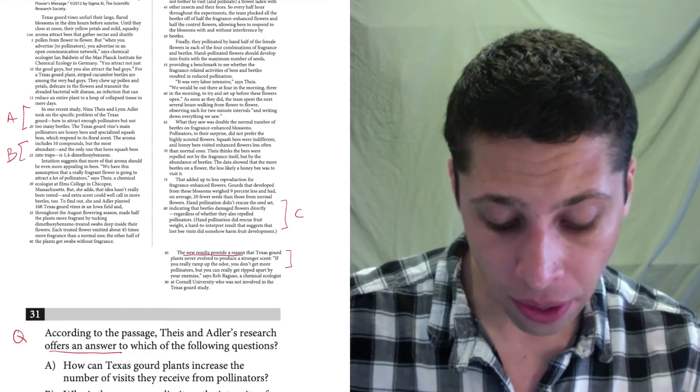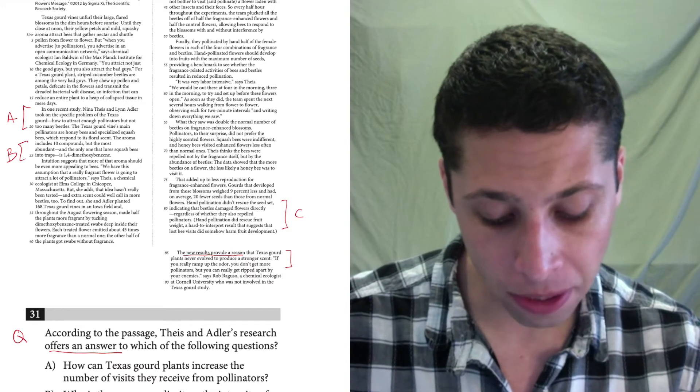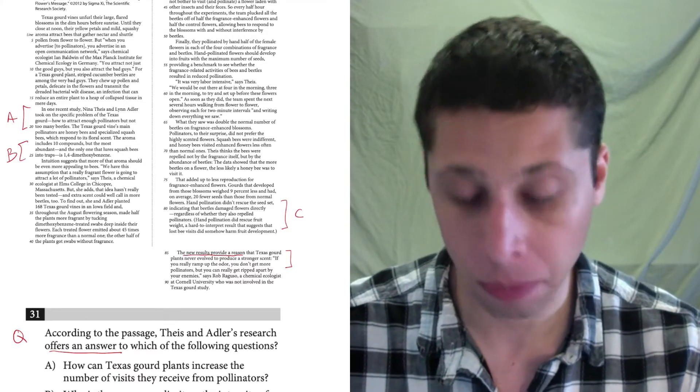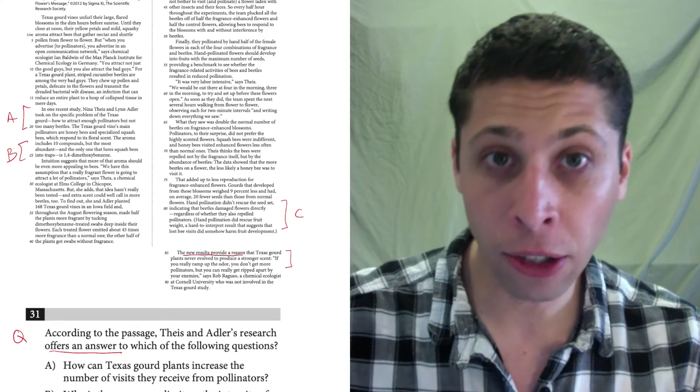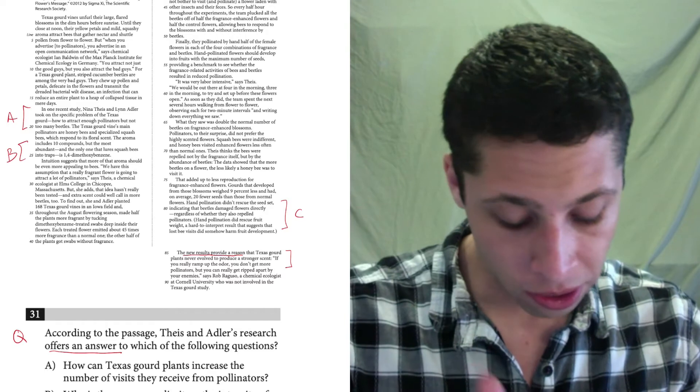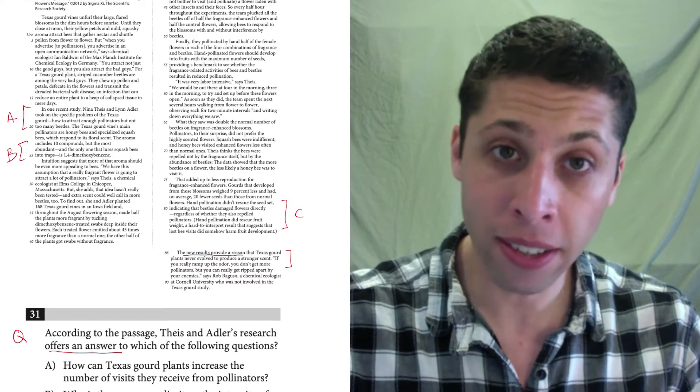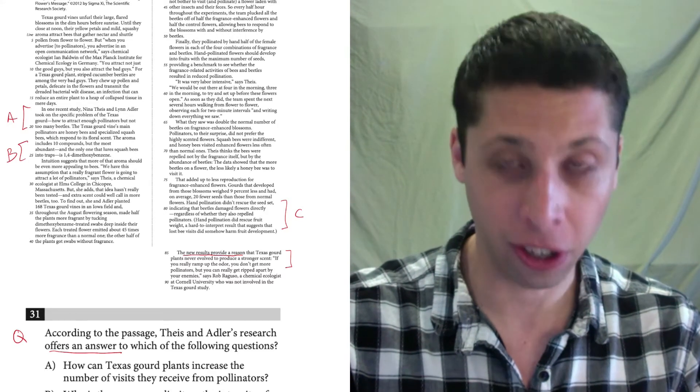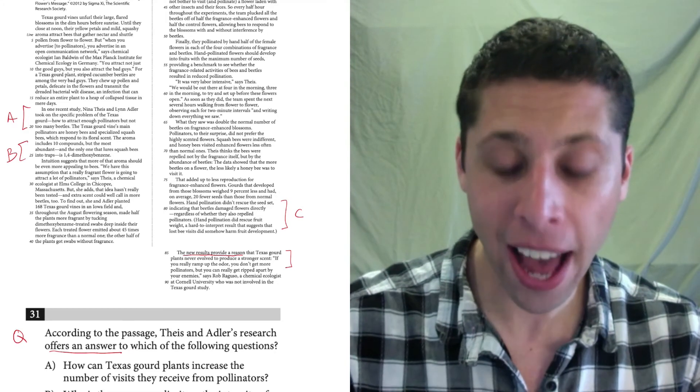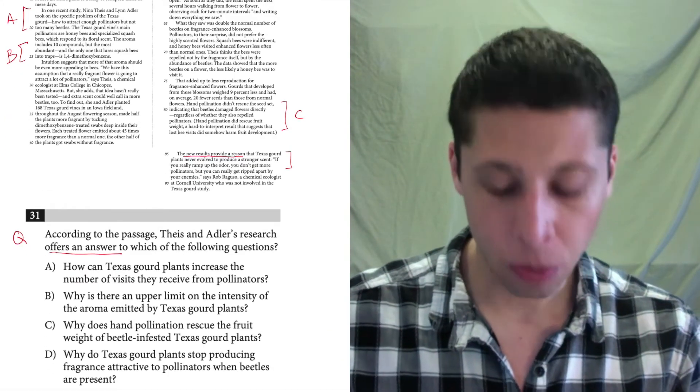The new results provide a reason that Texas gourd plants never evolved to produce a stronger scent to line reference A. In one recent study, Nina Theus and Lynn Adler took on the specific problem of the Texas gourd, how to attract enough pollinators but not too many beetles. So that's saying they took on a problem. That's choice A. Choice D is saying they now have a reason, an answer based on the results from this experiment that they did. That is a tighter match with the original question.